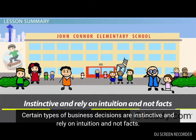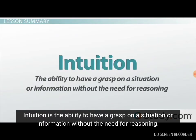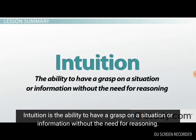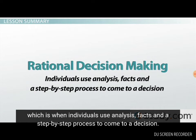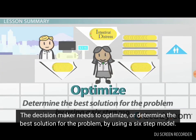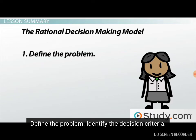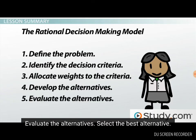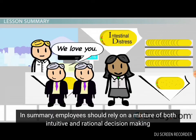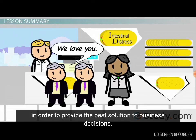Certain types of business decisions are instinctive and rely on intuition and not facts. Intuition is the ability to have a grasp on a situation or information without the need for reasoning. The opposite of intuitive decision-making is rational decision-making, which is when individuals use analysis, facts, and a step-by-step process to come to a decision. The decision-maker uses a six-step model: define the problem, identify the decision criteria, allocate weights to the criteria, develop the alternatives, evaluate the alternatives, and select the best alternative. In summary, employees should rely on a mixture of both intuitive and rational decision-making in order to provide the best solution to business decisions.